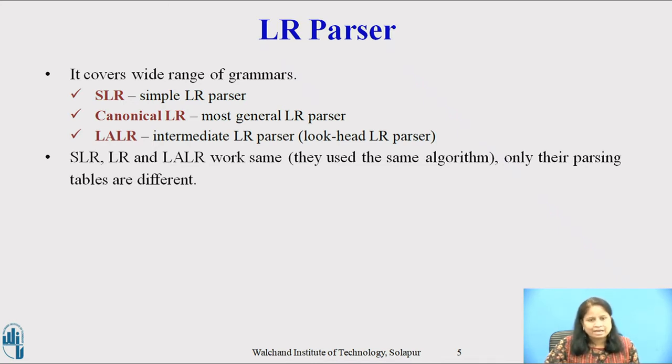SLR, LR and LALR work the same, only their parsing tables are different. SLR is easiest to implement but the least powerful of three. Canonical LR is the most powerful and most expensive and lookahead LR is intermediate in power and cost between the other two.